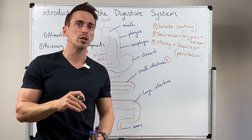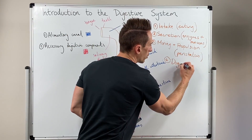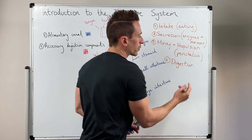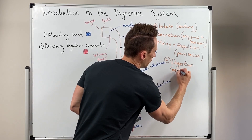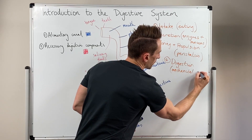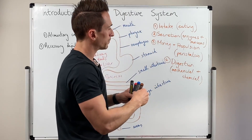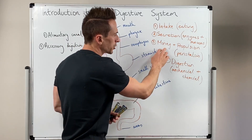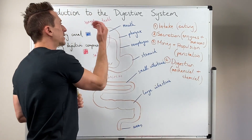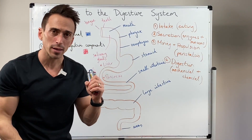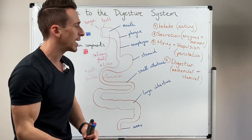Number four, another function of the digestive system is that of digestion. Importantly, you've got both mechanical and chemical digestion. Mechanical is physical digestion — that's actually part of this mixing and propulsion process, where we physically tear things apart. So our teeth and our tongue are able to break things apart — that's mechanical digestion. Our stomach can throw things around — that's mechanical digestion.